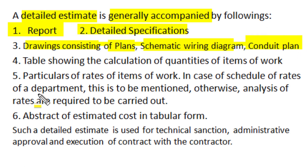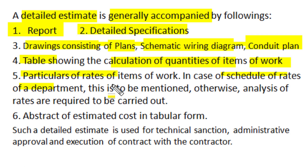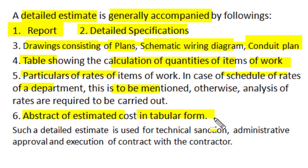In a detailed estimate, there is a specific table showing calculation of quantities of all items of material and work. The particulars of rate of each item or work are also mentioned. In case the basic schedule of rates of any department is referred, then it should be mentioned; otherwise, the rate analysis is also given. The detailed estimate also has an abstract of estimated cost in a tabular, easy-to-refer form.